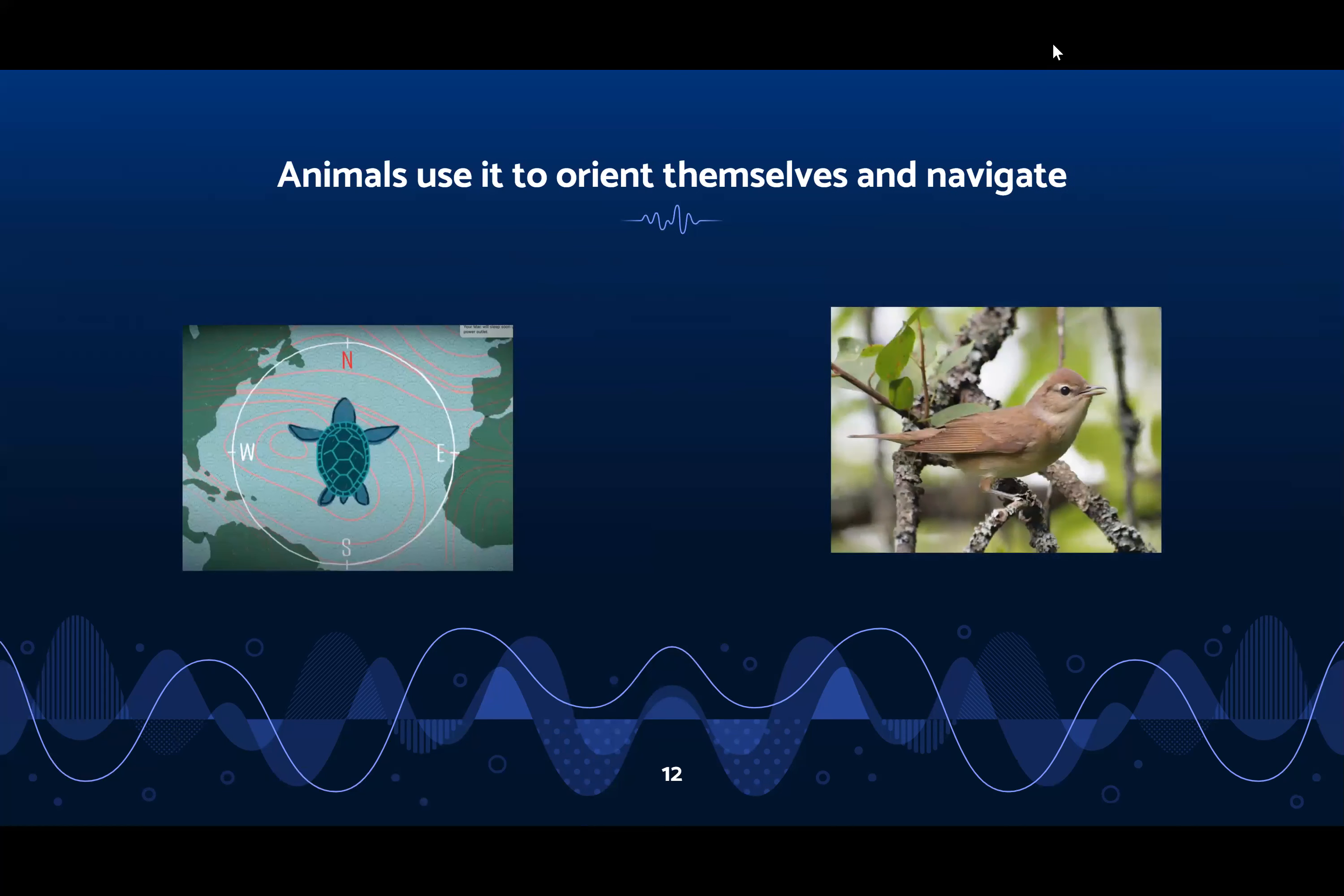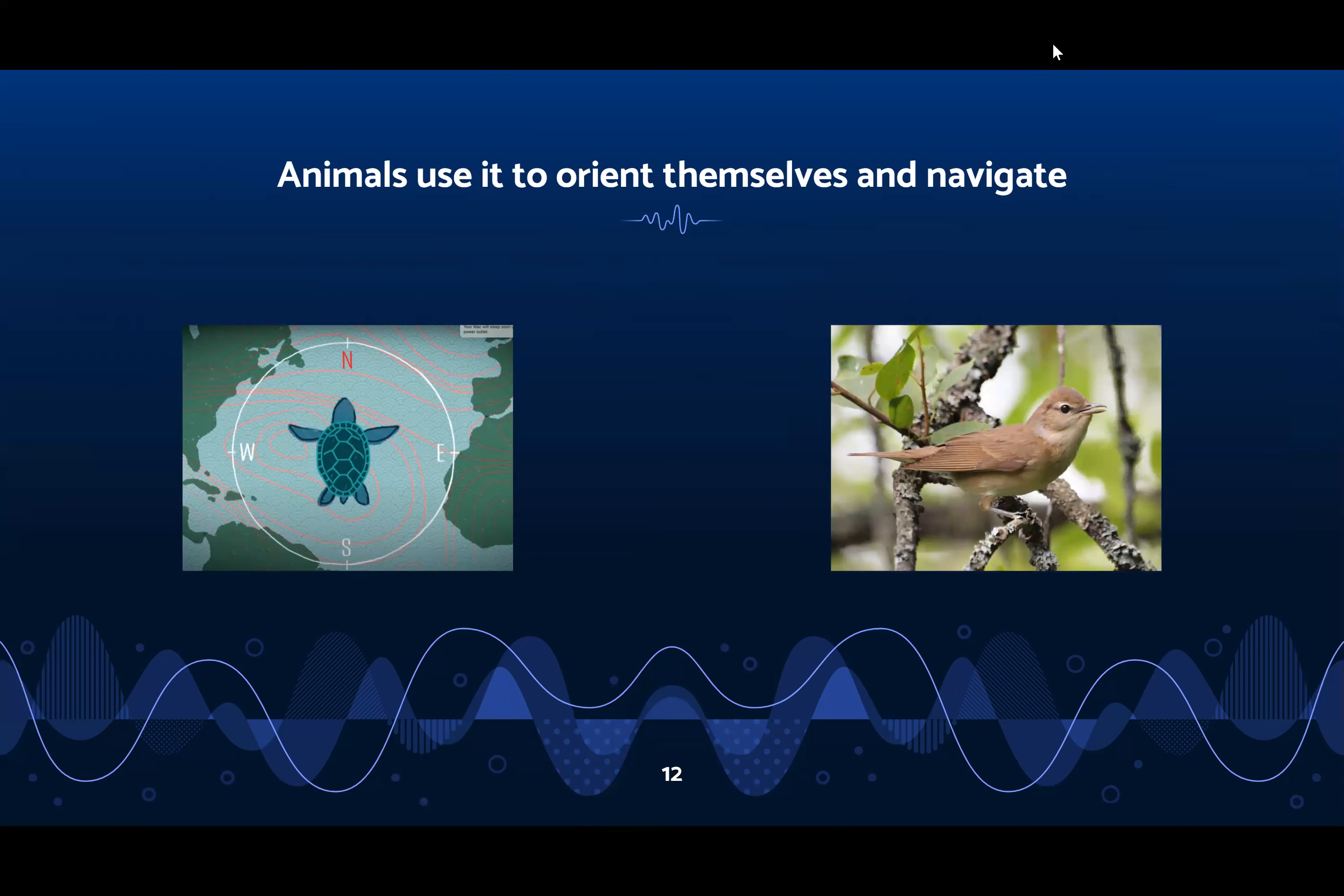Birds like the garden warbler use earth's magnetic field to guide their annual migrations. Recent research suggests that warblers and other migrating birds can use this field to get back on course if they get lost while migrating.